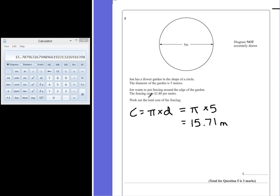Now to work out the value of the fencing, we know how many metres we've got, we know what the cost is, so we're going to multiply our value 15.70796 or 15.71 by the cost, so 1.8 to give us a final costing for the fence.